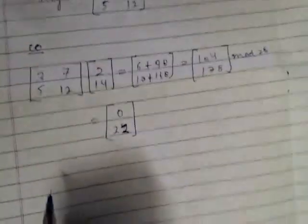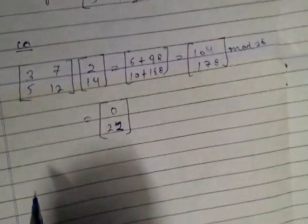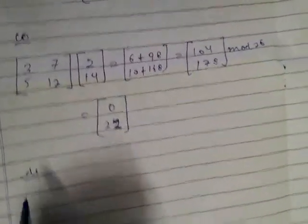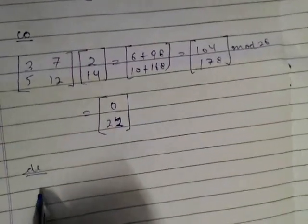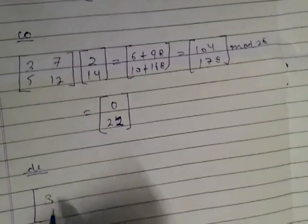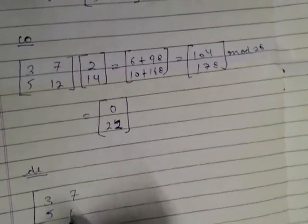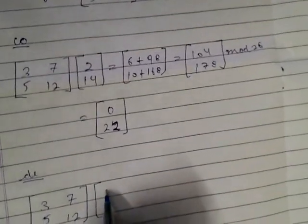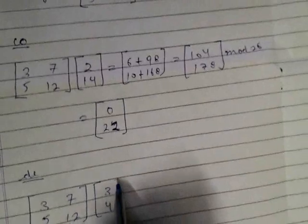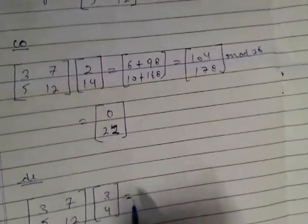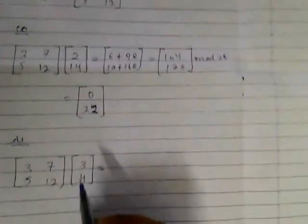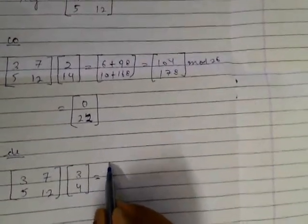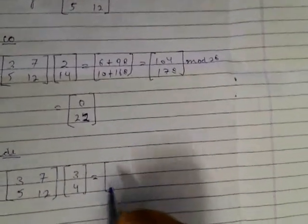Now for the letters D-E, similarly we will take the key 3, 5, 7, 12 and multiply by 3 and 4. What we need to do is solve it again and then take mod 26.